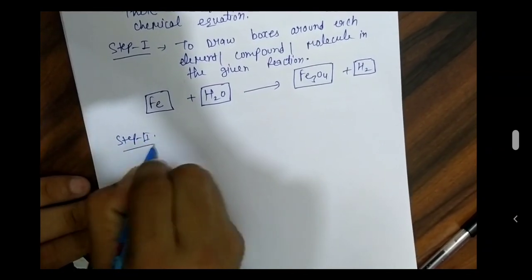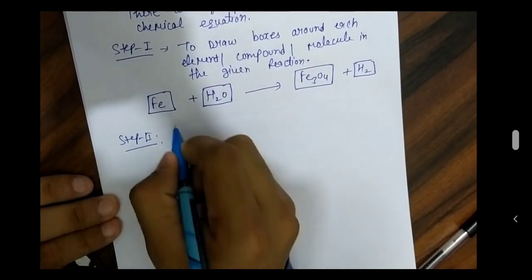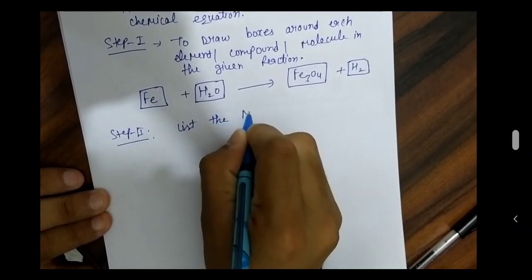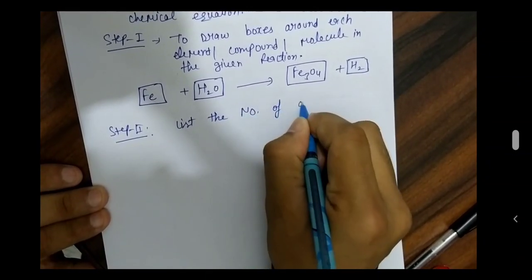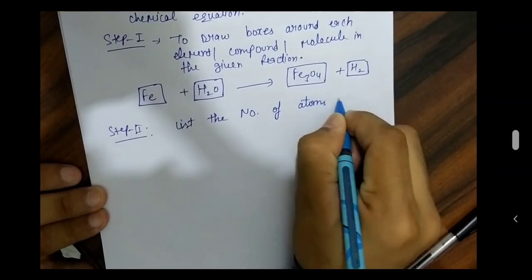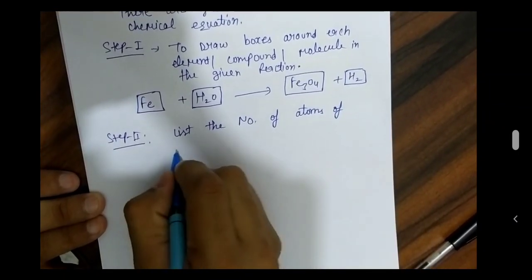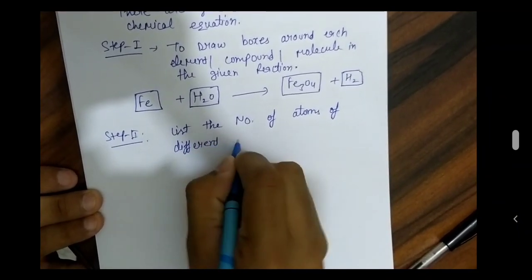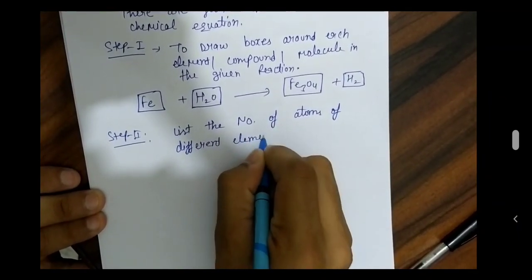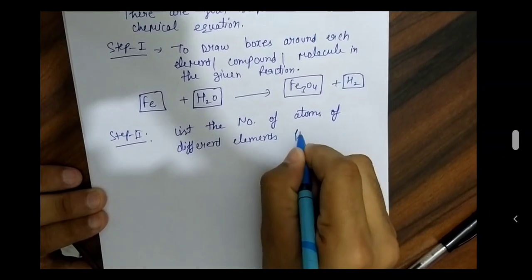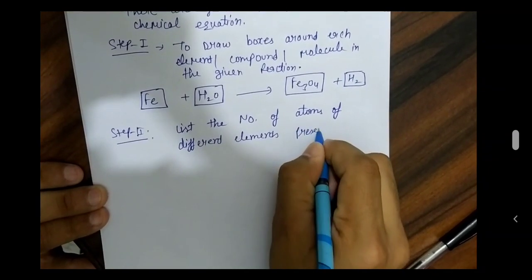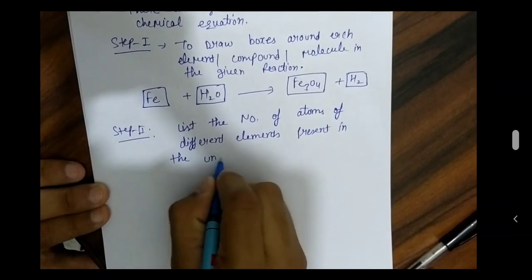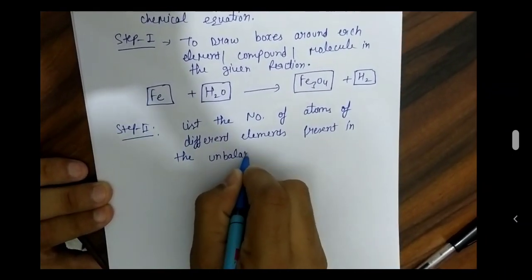In Step 2, we have to list the number of atoms of different elements present in the unbalanced equation.